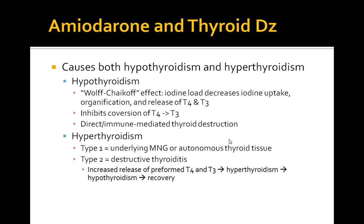The next topic is amiodarone and thyroid disease. Amiodarone causes both hypothyroidism and hyperthyroidism. There's a risk of thyroid dysfunction which is lower with lower doses. You want to check TSH prior to therapy, at four-month intervals on amiodarone, and for one year after if amiodarone-related side effects are experienced.